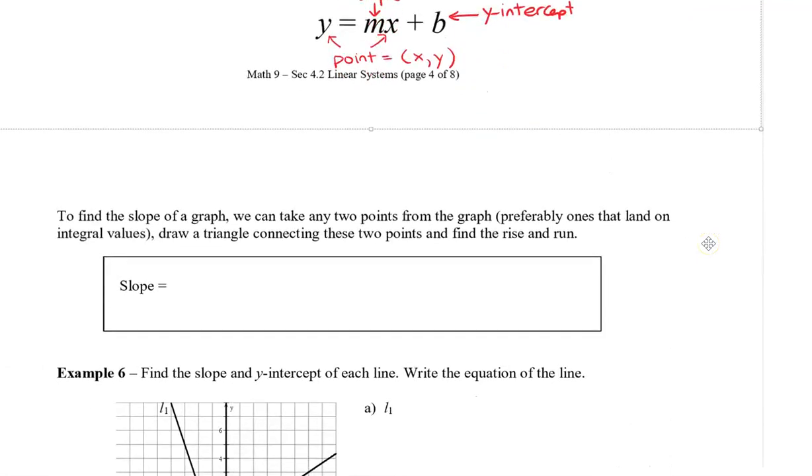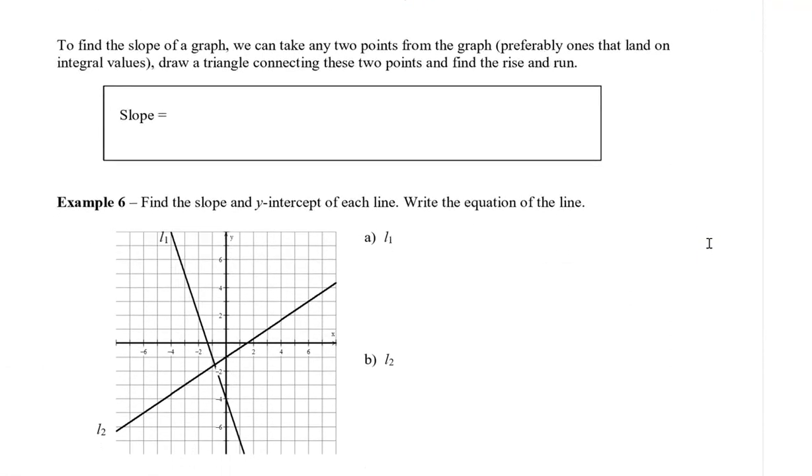Now if you're given a graph and you want to find the slope of the graph, we can take any two points from the graph, preferably ones that land on integral values, meaning that they are numbers that actually cross on the lines. And then we're going to draw a triangle connecting these two points to find the rise and run. So the slope is abbreviated by the letter m, and we can say that slope is equal to rise divided by run. You can also think of this as the change in the y-value divided by the change in the x-values.